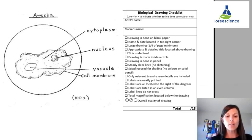So let's take a look at the requirements for the biological drawing checklist. The first thing that we notice is obviously we have to have the artist name up here. We need the markers name and in this case this is going to be me and then let's take a look at what is required and how this person did.